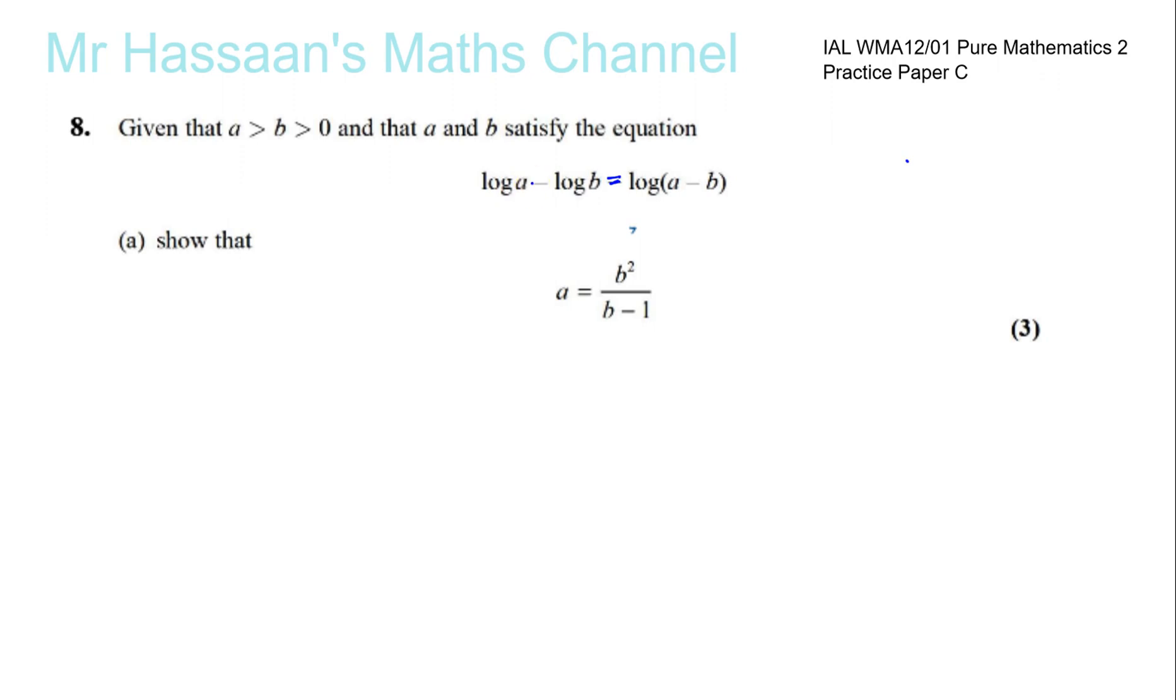log A minus, it's not very well printed, minus log B equals log A minus B. Show that A equals B squared over B minus 1.